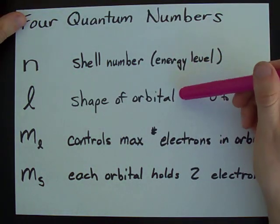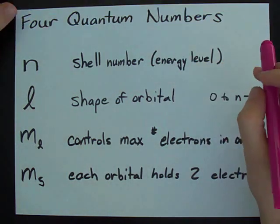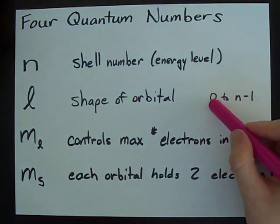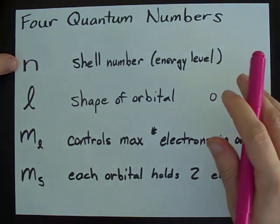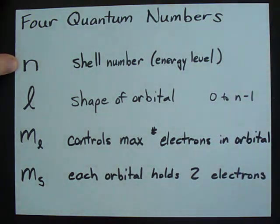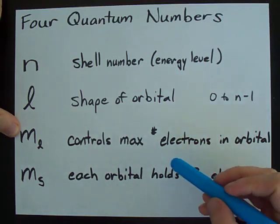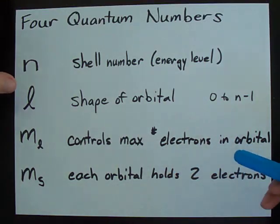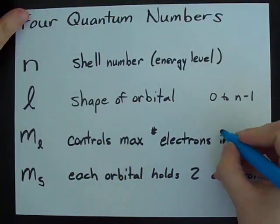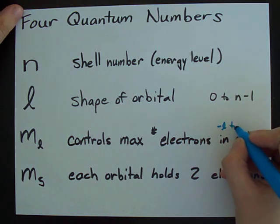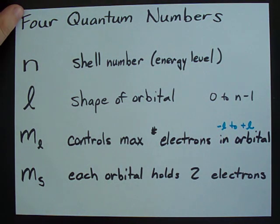L gives you the shape of the orbital. And there are different values that L can take, all the way from zero up to whatever n is, minus one. ML helps to control the maximum number of electrons in each orbital. It goes from negative L to positive L. And I'll give you an example of what I mean.